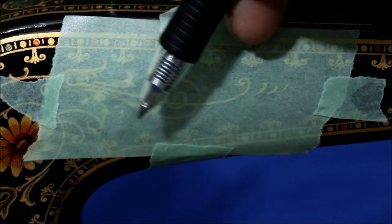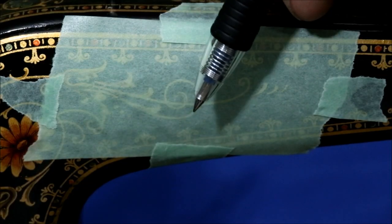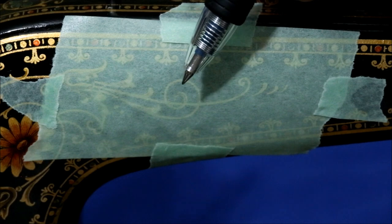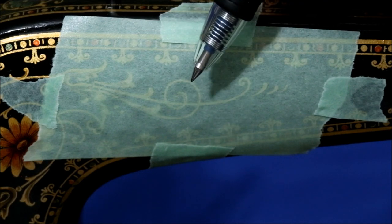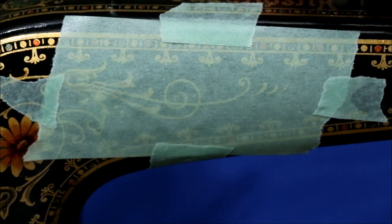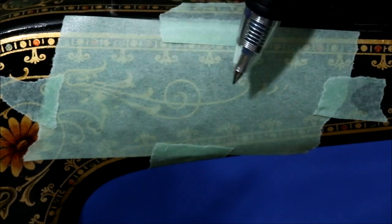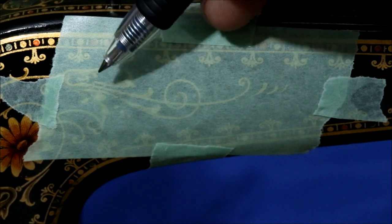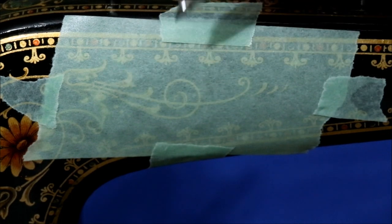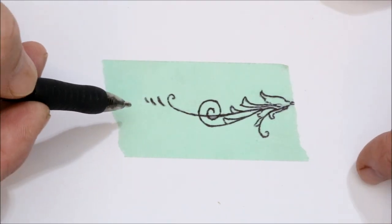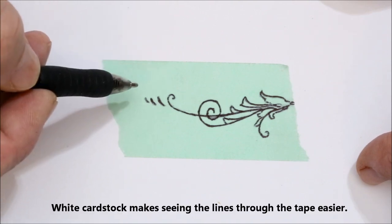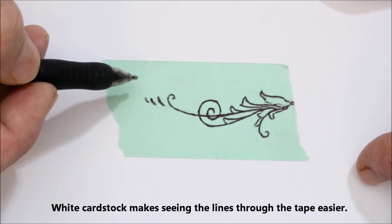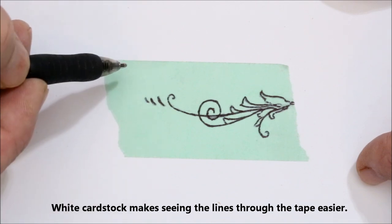Start by covering the area to be reproduced with masking tape that you can see through, but with the sticky side facing out. Use small pieces of tape to secure it. Next, use a fine pen to trace out the design needed. Remove the tape and put it sticky side down this time on a piece of white card stock. This reverses the image so that it's correct for the opposite side.